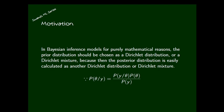We are going to explain the importance of Dirichlet mixture distribution with the help of this motivation. In Bayesian inference models, for purely mathematical reasons, the prior distribution should be chosen as a Dirichlet distribution. This is a key hint: in Bayesian cases we choose the prior distribution as Dirichlet because then the posterior distribution is easily calculated as another Dirichlet distribution or Dirichlet mixture. If the prior is Dirichlet, the posterior is automatically Dirichlet — this is called a conjugate pair, or the prior is a conjugate prior of the likelihood distribution.